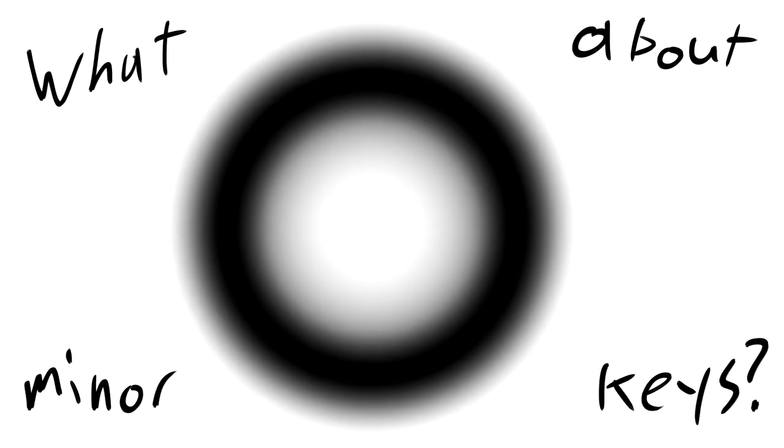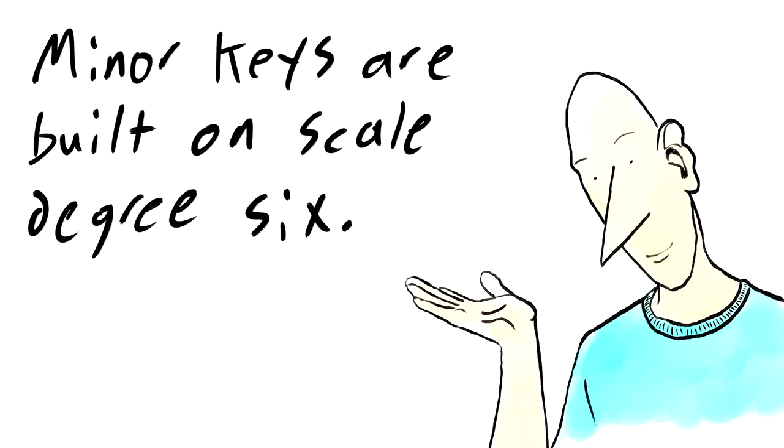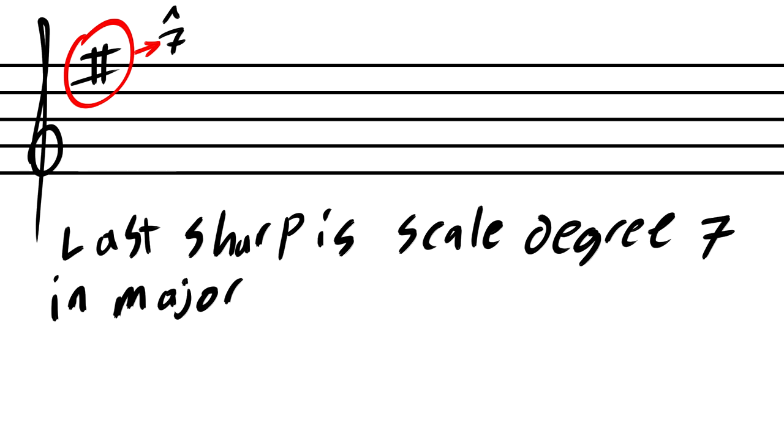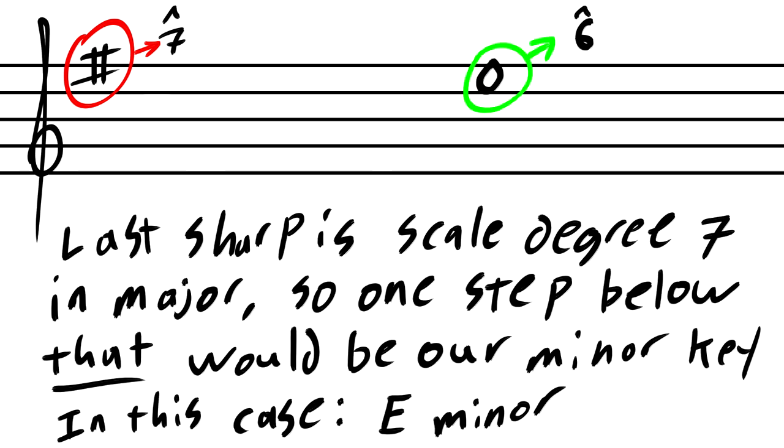So what about minor keys? I hear you scream into the eternal void. Well, the minor scale is built on scale degree six, and if the last added sharp is scale degree seven, then that must mean... Yes, we drop down a whole step below the last added sharp. For the G major key signature, that would mean E minor.